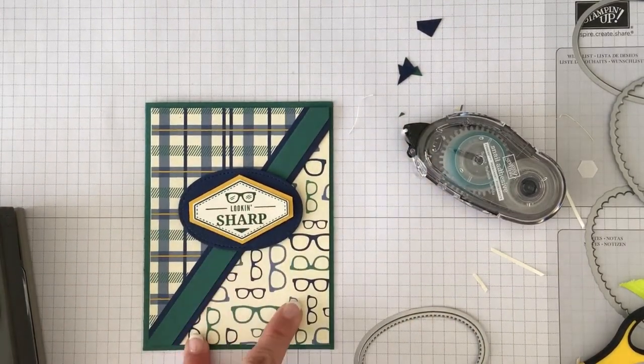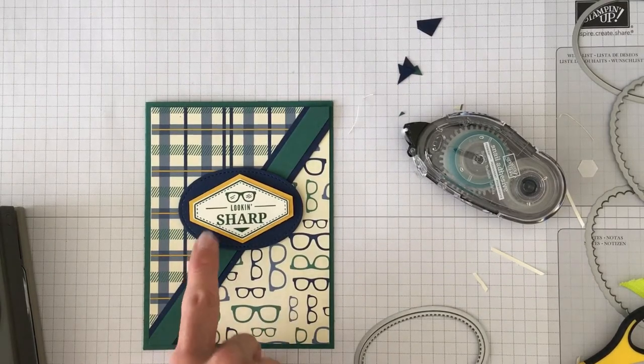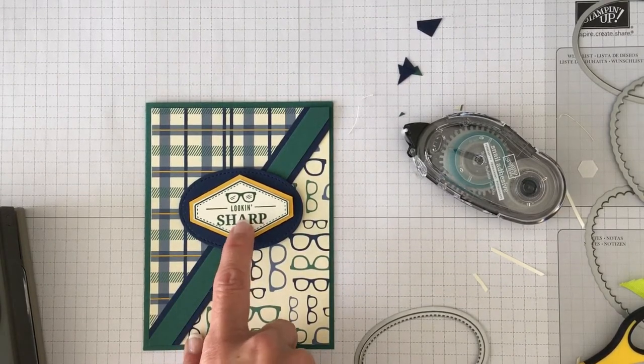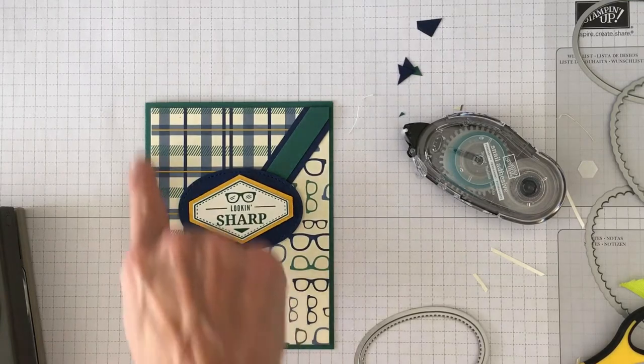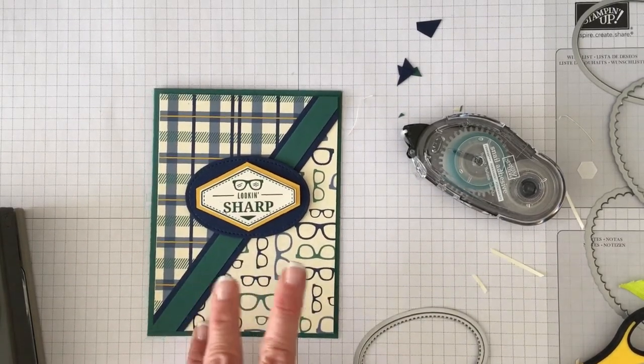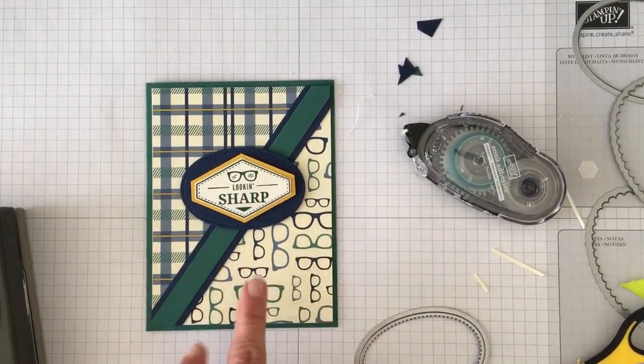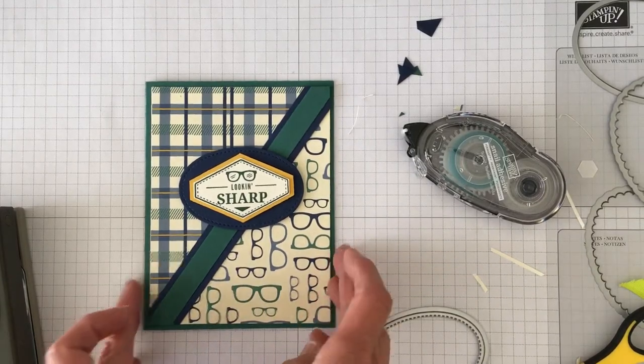So you've got the eyeglasses and the eyeglasses. You've got the navy, the navy. You've got the Tranquil Tide ink, the Tranquil Tide on the card. I always try to make sure each color I've used on a card I've either doubled it or tripled it on the card.